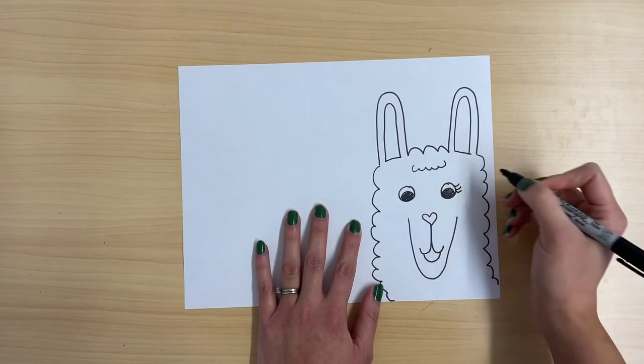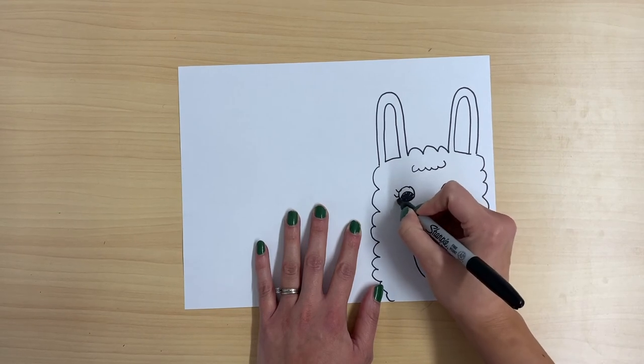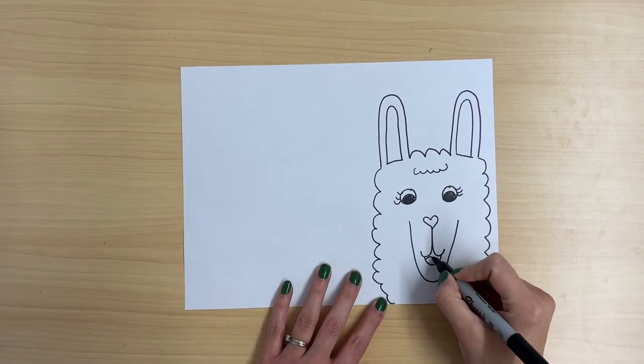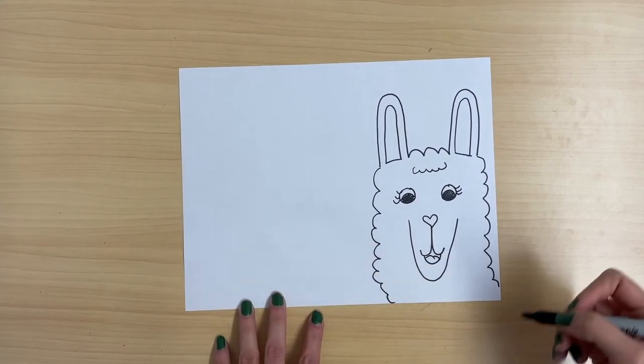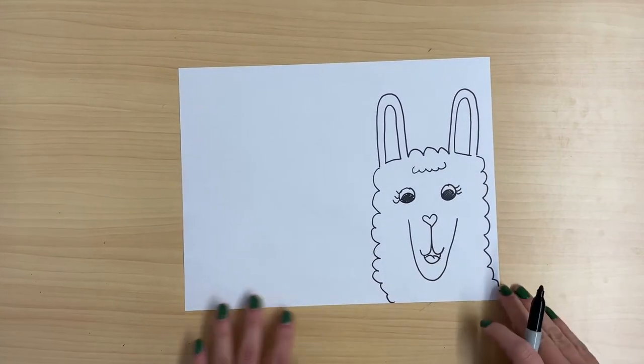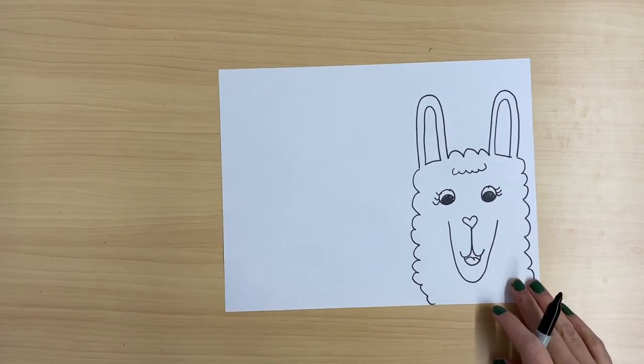And I'm also going to draw some eyelashes on my llama. You can add any other details you want. I'm going to add a little tongue there in my llama's mouth. You can draw a scarf or your llama wearing a hat. Use your imagination.